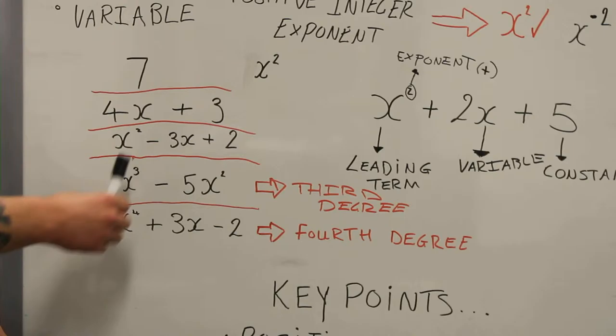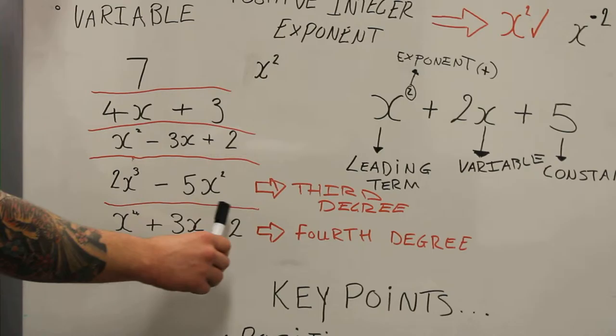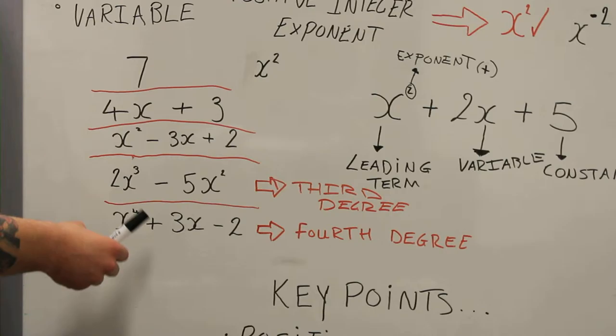Now, for the smaller polynomial expressions, meaning the smaller exponents, we have names for the polynomial expressions. Here we have x squared minus 3x plus 2. This is what's known as a quadratic equation, because it's to the power of 2.